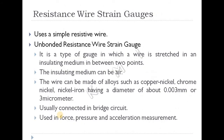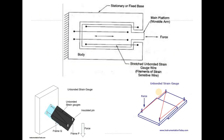The wire used in unbonded strain gauge is made of copper-nickel, chrome-nickel, or nickel-iron. The insulating medium is air, so it is unbonded — the wire is not directly attached to the surface.